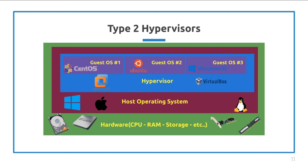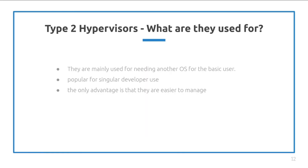You can create as many as you need, but you have to keep in mind the limits of your system resources. The main purpose of type 2 hypervisors is supplying another operating system for the basic user, with the main targets being testers and developers. By being installed on top of the original host operating system, these virtual machines are easier to manage because they do not need additional software packages to manage them.